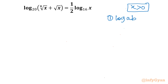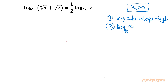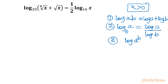Now the log properties we will use: Property 1 — log(a·b) = log a + log b. Property 2 — log a base b = log a over log b (change of base). Property 3 — log(a^b) = b·log a.